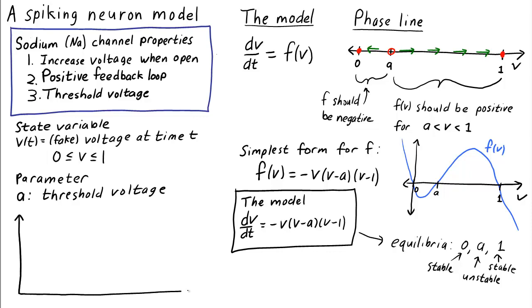The neuron model has the required behavior. Let's imagine that the neuron starts at rest. If it then receives an input that bumps its voltage upward, but the voltage stays below A, what happens? The voltage decays back down to zero.